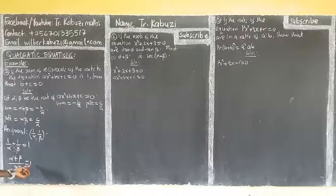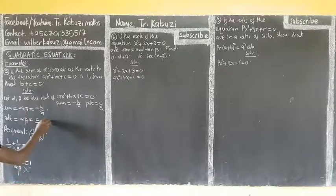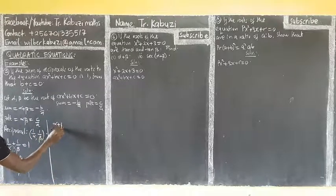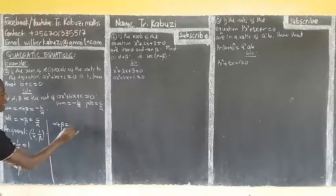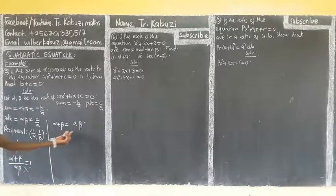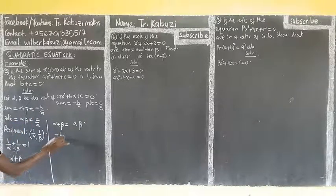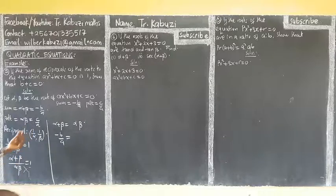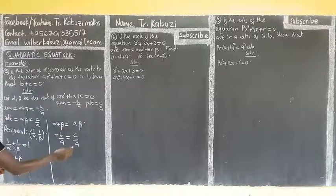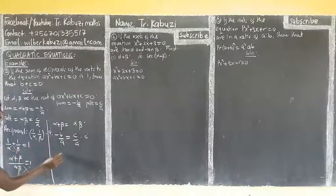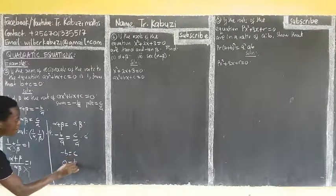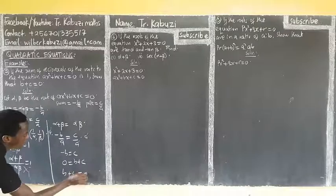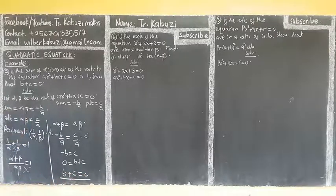Cross-multiplying gives us alpha plus beta equals alpha times beta. Now we substitute: alpha plus beta is negative b over a, and alpha beta is c over a. Multiplying through by a on both sides, we get negative b equals c, which means b plus c equals zero.